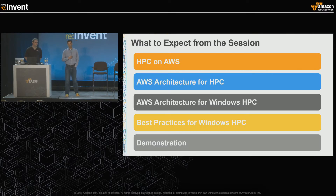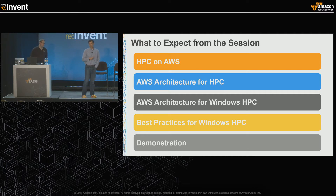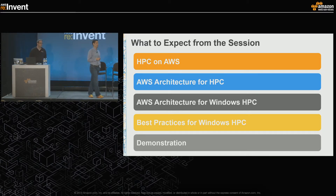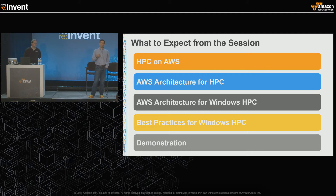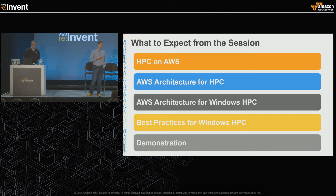Today we're going to talk about a number of different things. We're going to talk about HPC on AWS - what does that mean. We're going to talk about AWS architecture for HPC, more specifically for Windows HPC - what services and features you can take advantage of to really optimize your workload. We'll cover best practices for Windows HPC on AWS, and lastly, how to make that automated and orchestrated so you can quickly get started running Windows HPC workloads in the cloud.